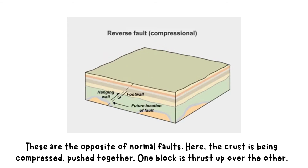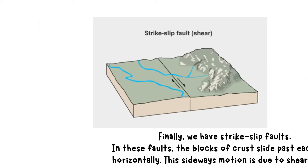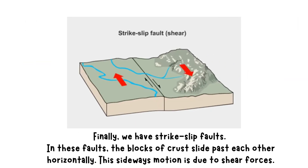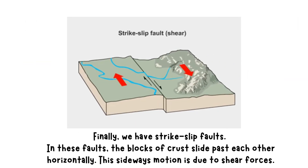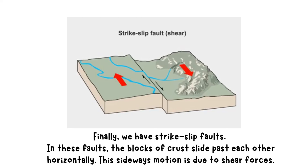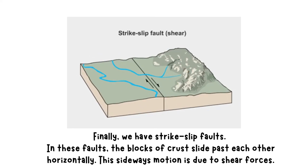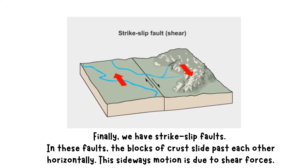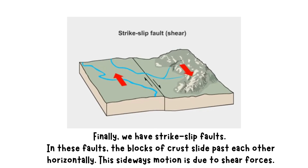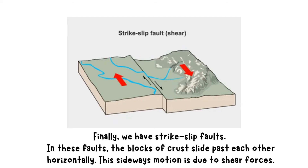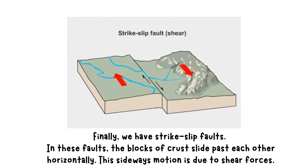Finally, we have strike-slip faults. In these faults, the blocks of crust slide past each other horizontally. This sideways motion is due to shear forces. When the stress overcomes the friction holding the rocks together, they slip, leading to an earthquake.